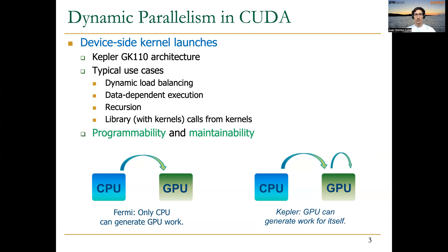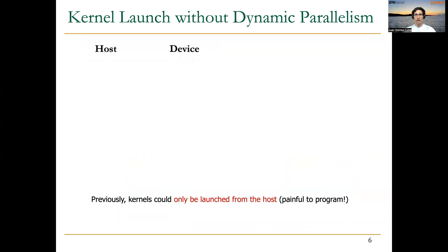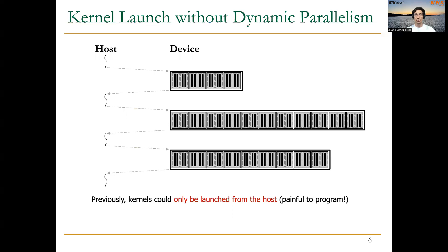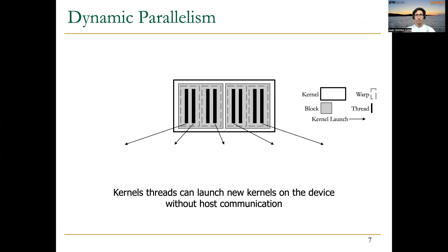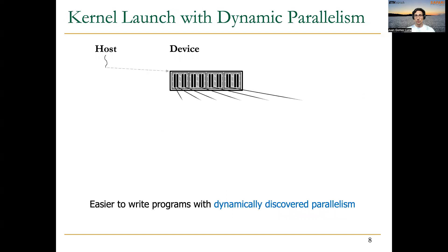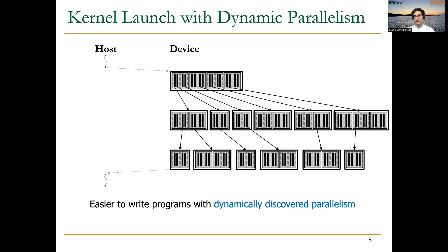The biggest advantage is that dynamic parallelism is good for programmability and maintainability. Without dynamic parallelism, we always need to involve the host processor to perform kernel launches, which is relatively painful to program. With dynamic parallelism, it's possible to launch new kernels from within the GPU as soon as some new work is discovered. We only need to launch one kernel in the beginning from the host, and then the threads running on the device will be able to launch their child kernels to deal with dynamically discovered work.